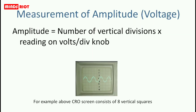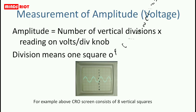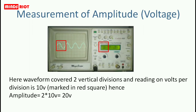Now, measurement of amplitude. The CRO screen consists of 8 divisions — a division means one square of the CRO screen. This waveform covers 2 vertical divisions, and the reading on volts per division is 10 volt. Hence, the amplitude is 20 volt.